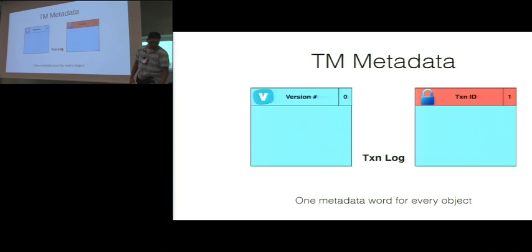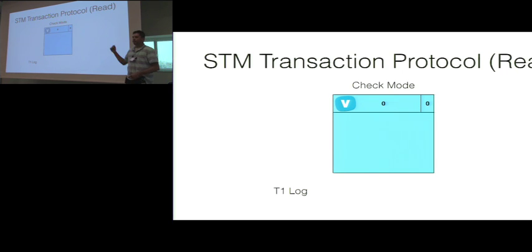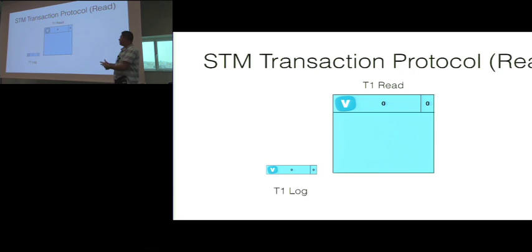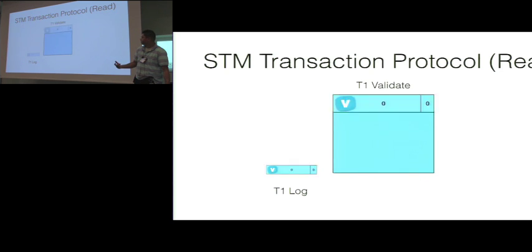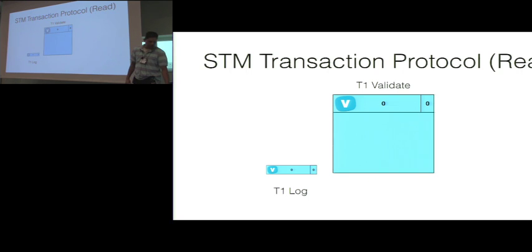For a read, you first check the least significant bit to see whether the object is locked. If it is not locked, you take a copy of the current version number and proceed with other operations in the transaction. When you want to commit, you validate by checking the version you read against the current version of the object. If that validation succeeds, you can commit.